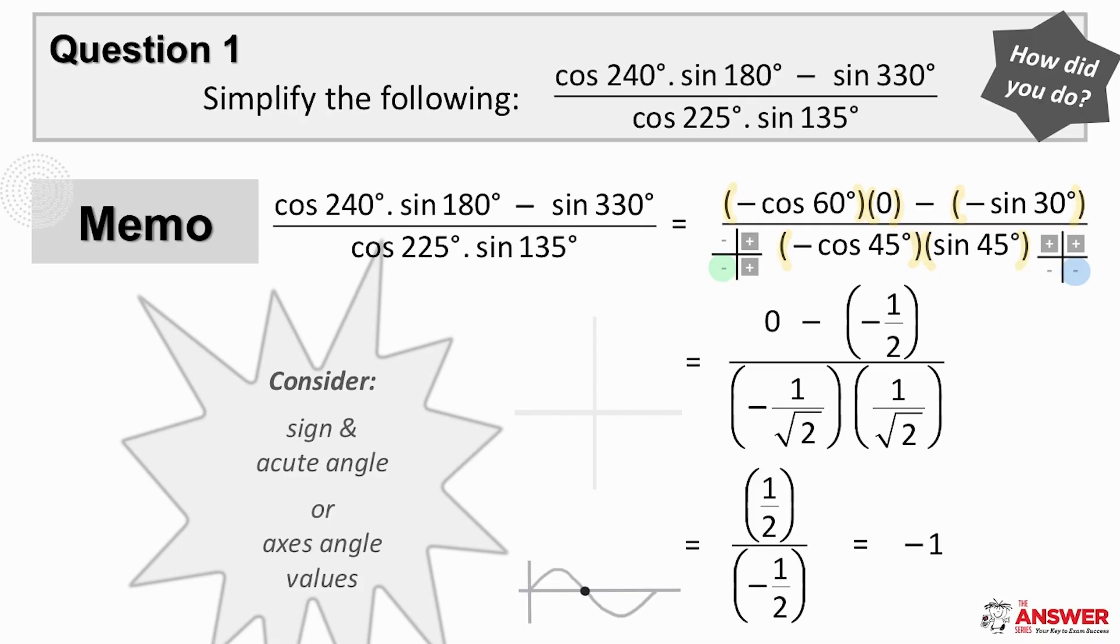Then in the denominator, cos of 225 reduces to negative cos 45 degrees and sine 135 reduces to positive sine 45.